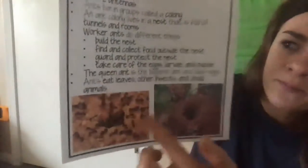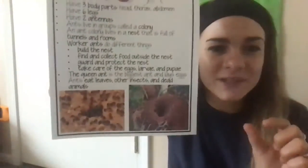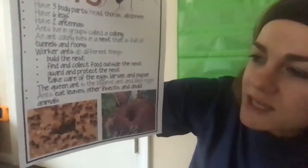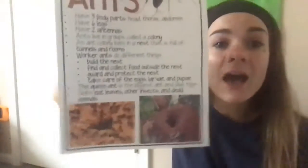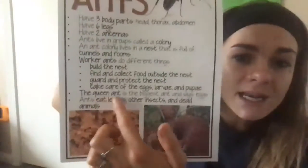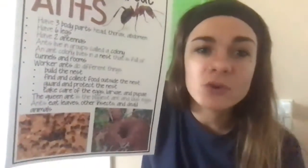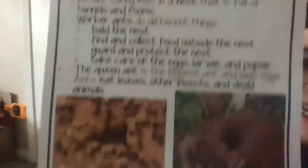There are different kinds of ants. Worker ants do different things — they help build the nest, they find and collect food outside the nest, and they carry it inside to feed the other ants. They guard and protect the nest and take care of the eggs inside — the baby ants. Just like bees have a queen bee, ants have a queen ant, and it's the biggest ant. Her job is to lay eggs, just like the queen bee. Ants eat leaves, other insects, and dead animals.